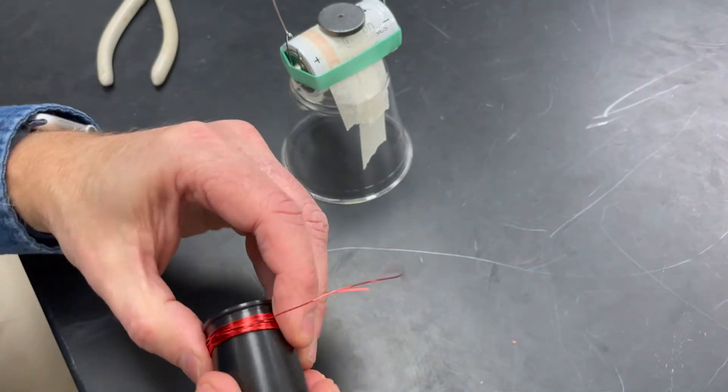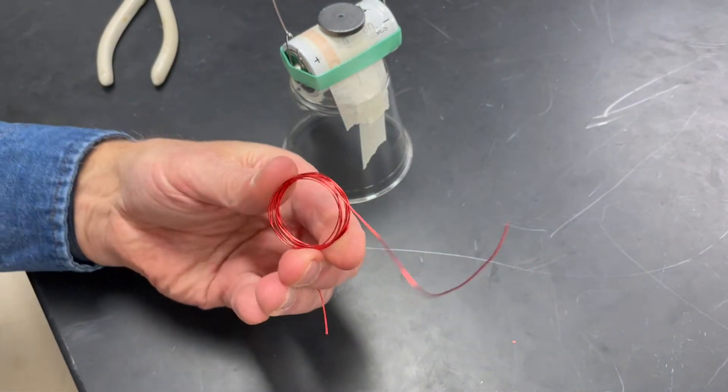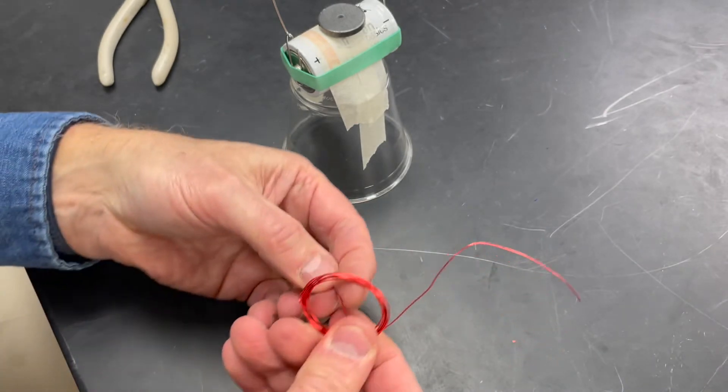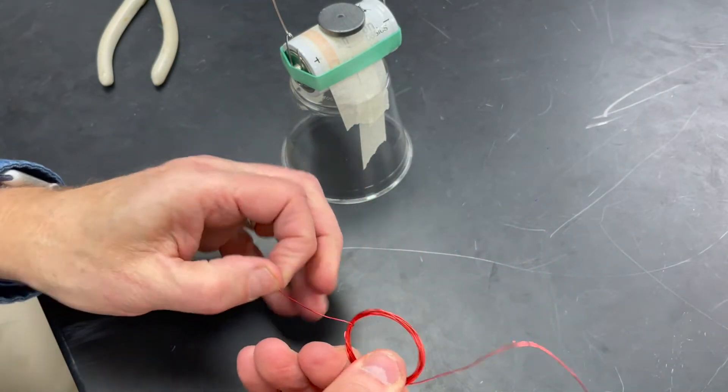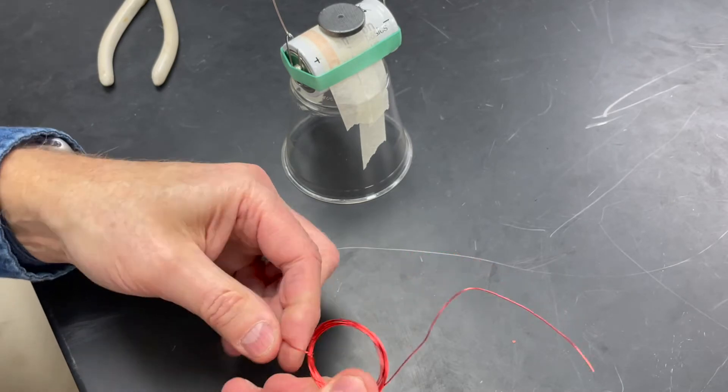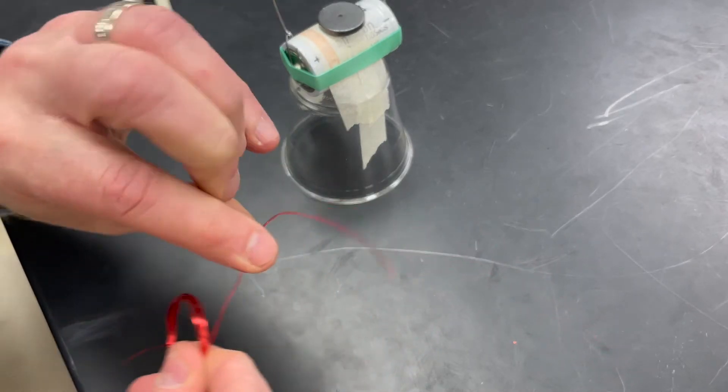Make a nice tight coil and slide it off. And now we're going to wrap the loose ends around the two opposite sides so we can leave a strand sticking straight out to the side.